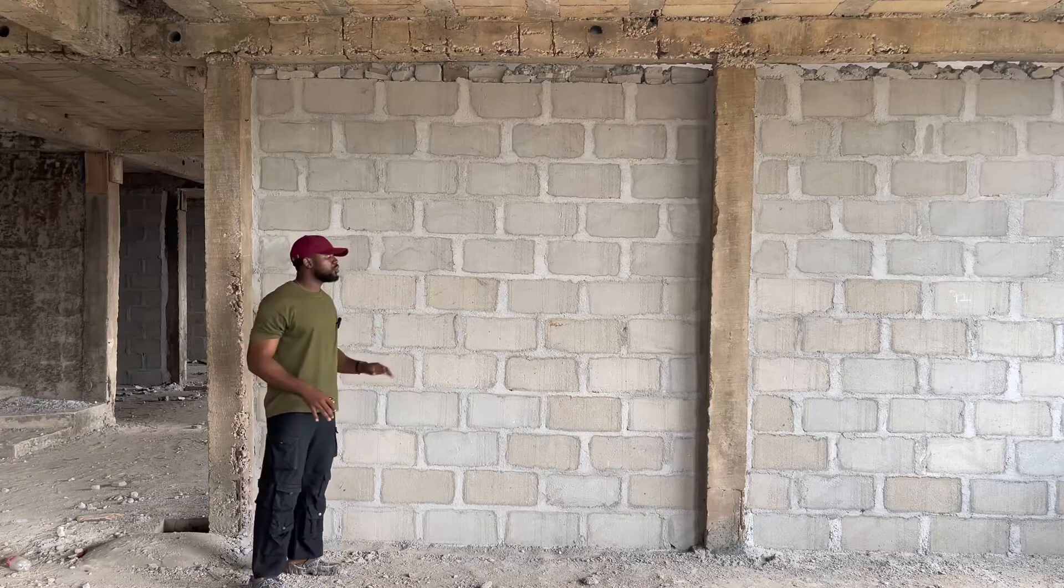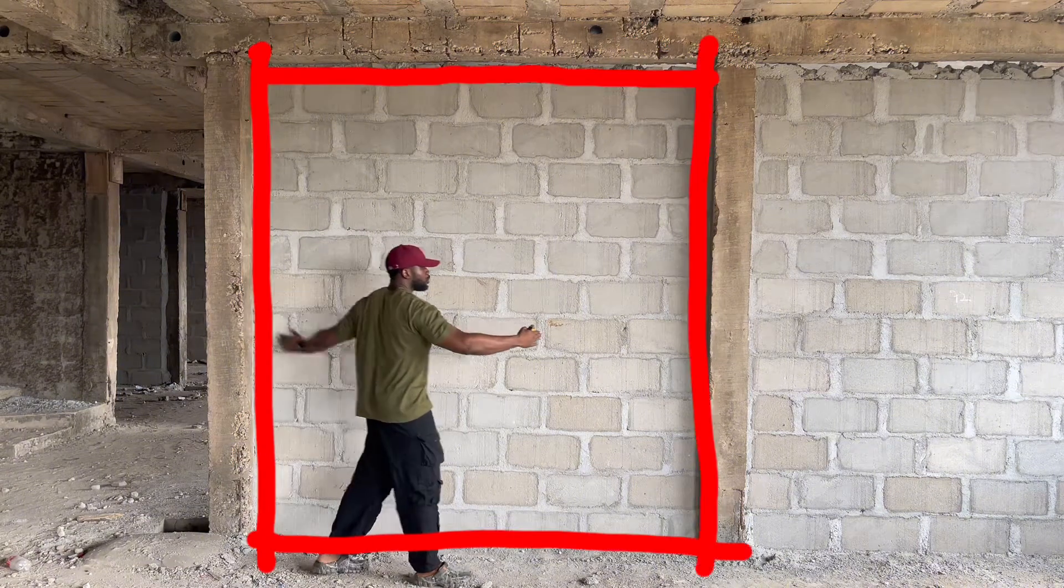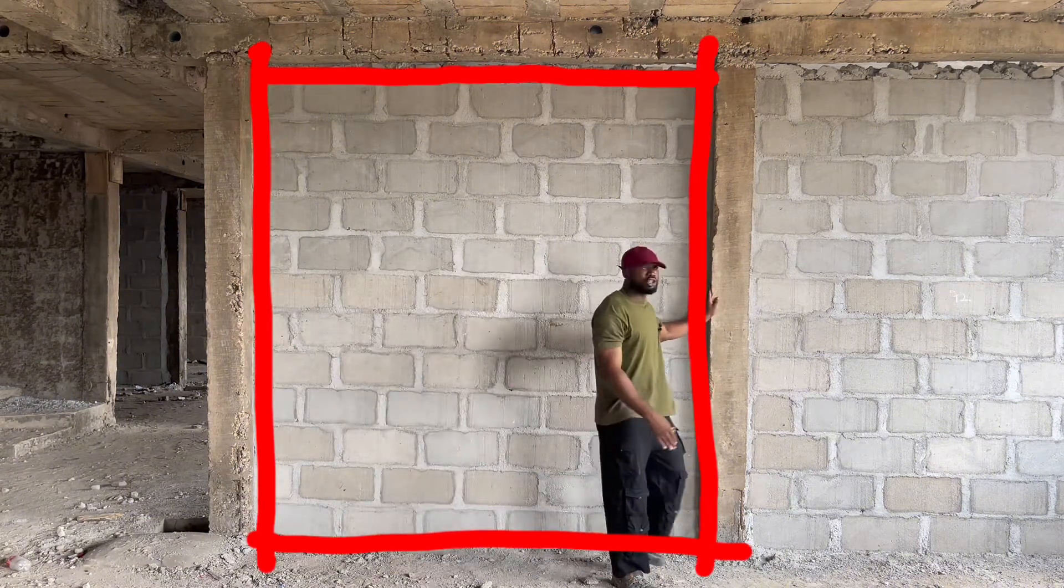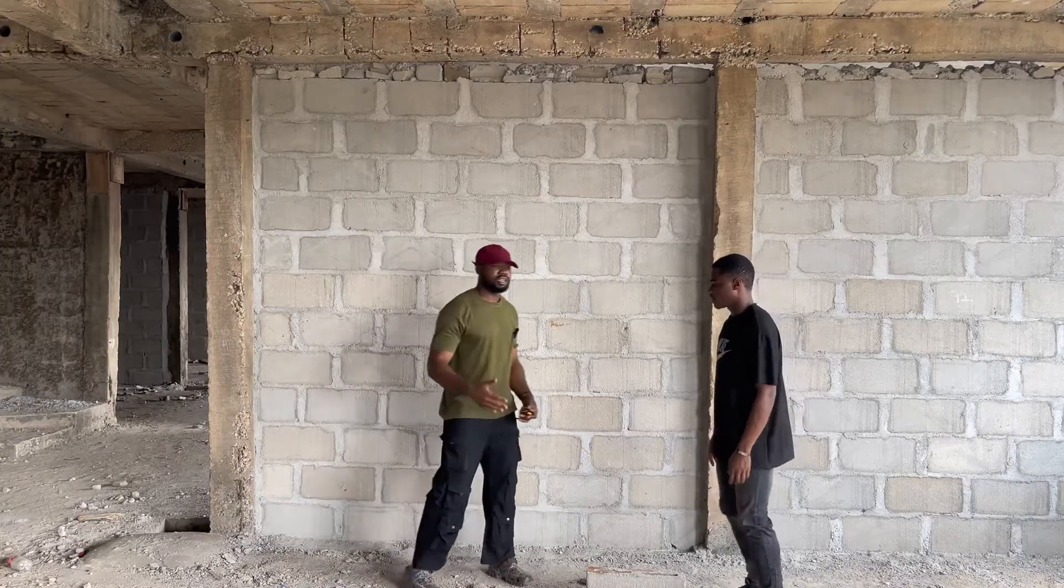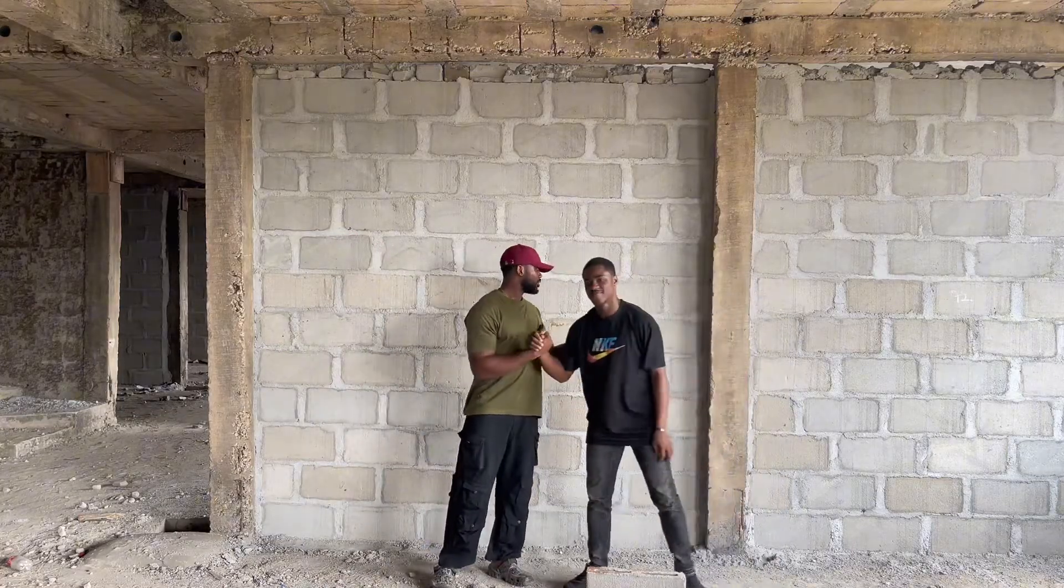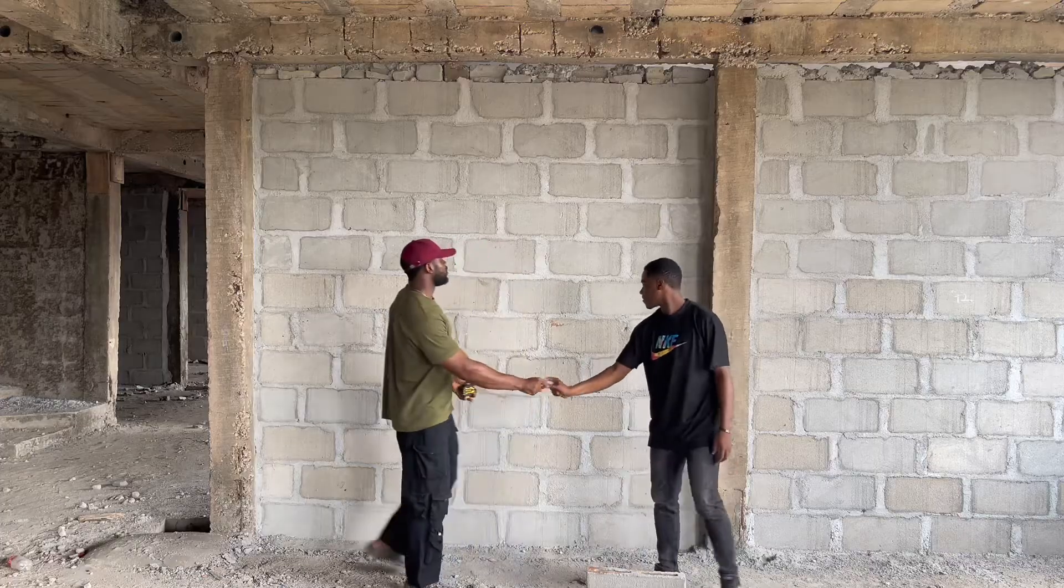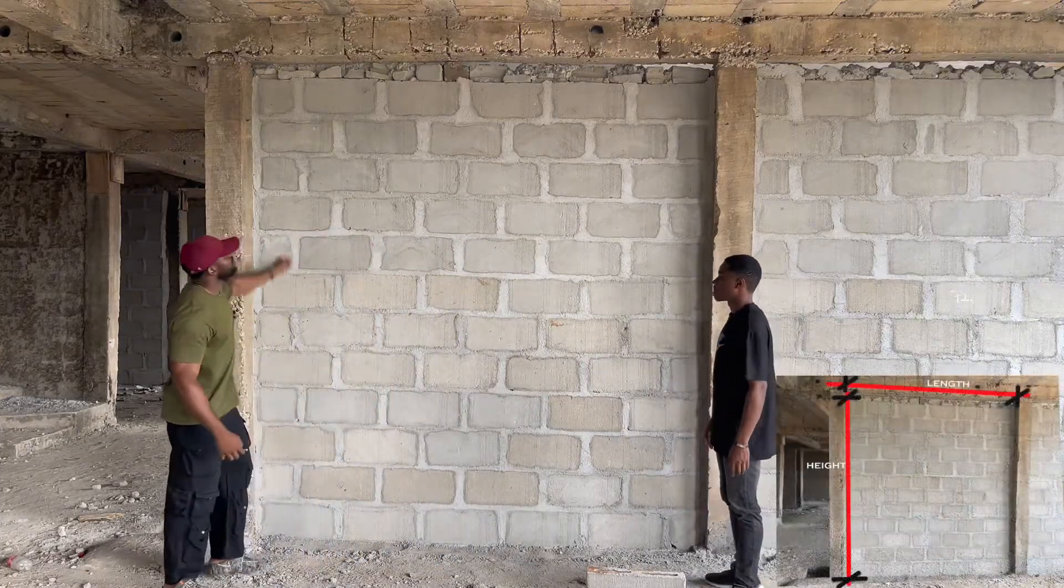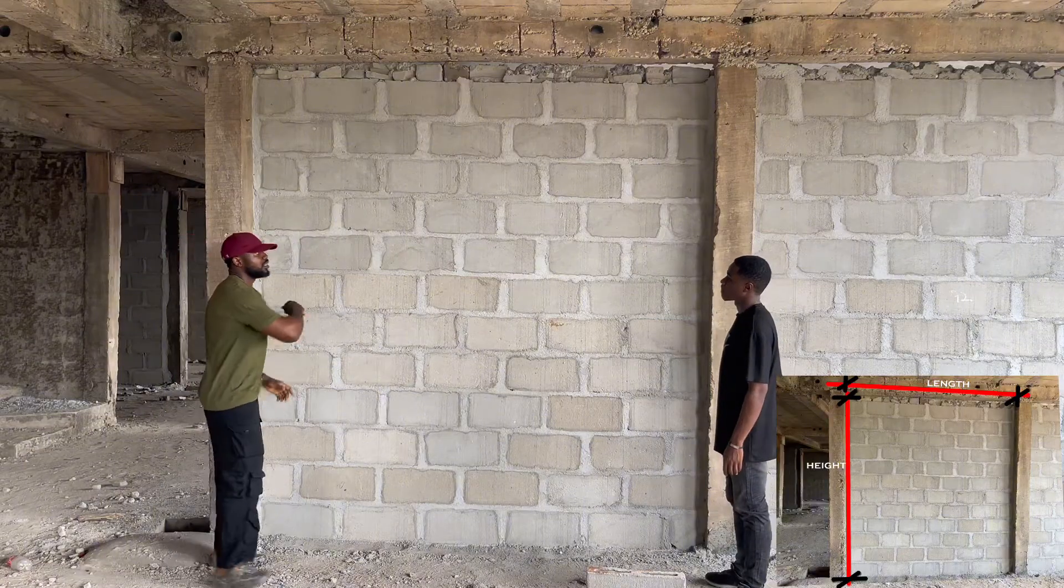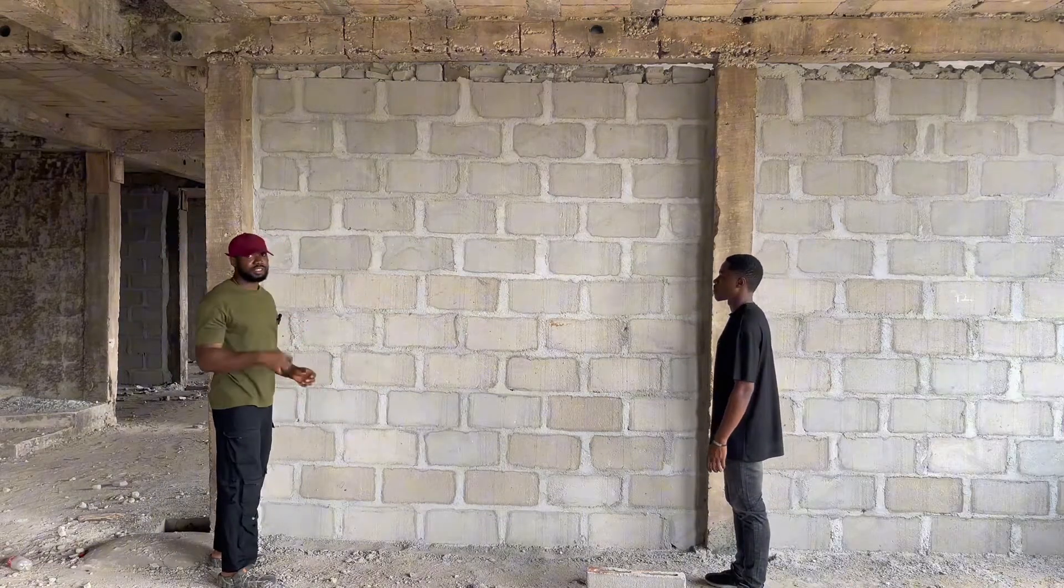For this video I'm going to use this partition wall for this illustration. I'm going to have my friend Ebube take the measurements with me. The first thing we're going to do is get the height and length of the partition. Let's get the height first.